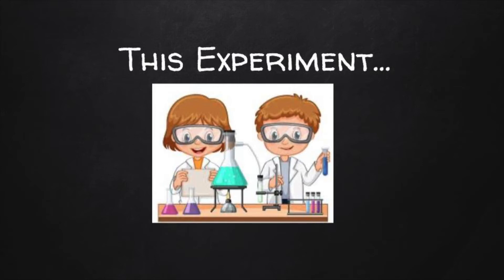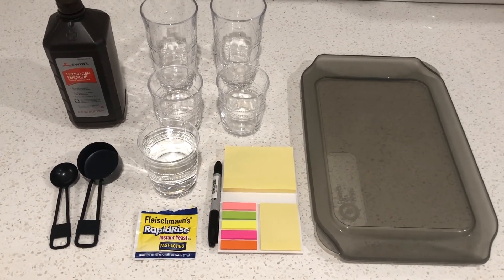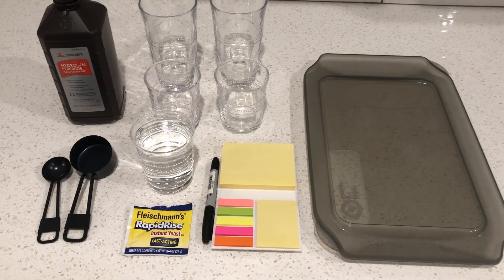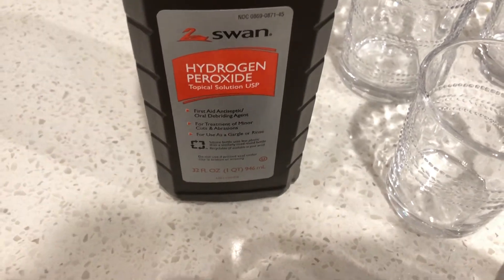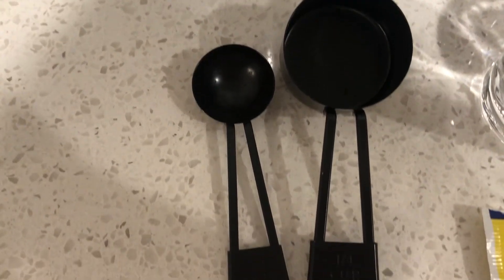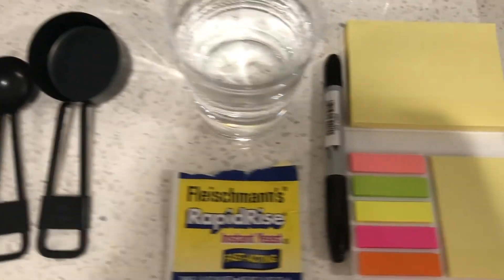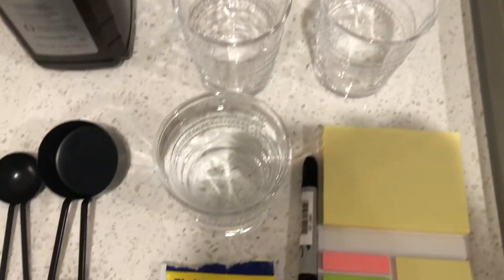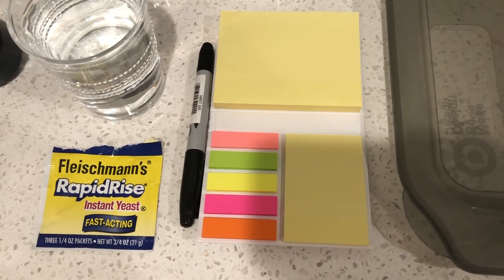Now we are going to get started with the experiment. For this experiment we are going to need a few basic items easily retrievable from most people's kitchens: hydrogen peroxide (the 3% version), measuring spoons — a 1/4 cup measurement and a tablespoon measurement — one packet of yeast, 4 cups, 1 cup of water, some sticky notes to label our cups, and a sharpie.